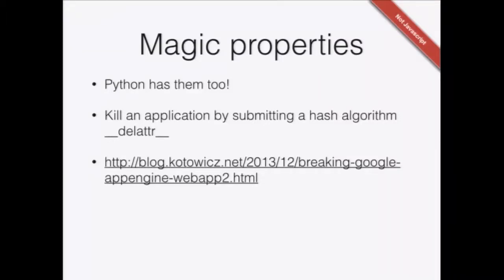This isn't really unique to JavaScript. Magic properties are present in various languages. For example, Python has a lot of magic properties on various objects, and I demonstrated how to kill an application by deleting an attribute using a magic property in a Python application running on App Engine. So this is not something unique to JavaScript.